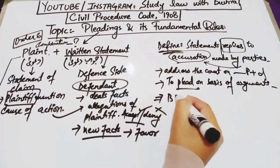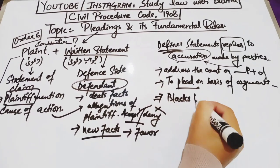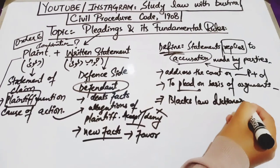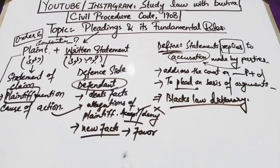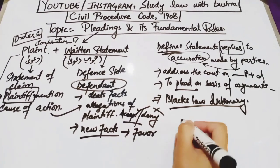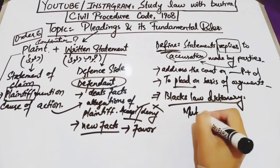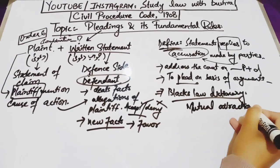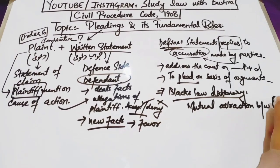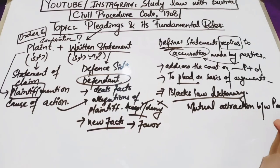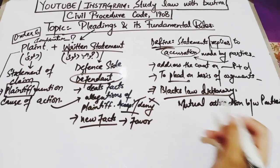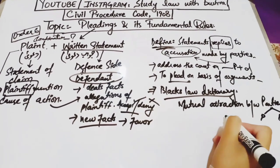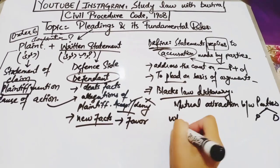Black's Law Dictionary has defined pleading in very simple and easy words. According to Black's Law Dictionary, pleading simply means mutual altercation between parties — that is, plaintiff and defendant — which are presented, set down, or delivered in an office.